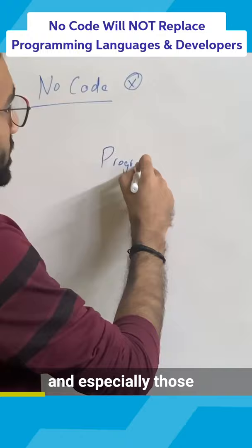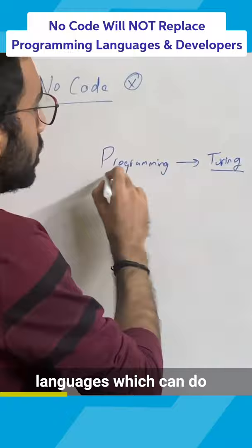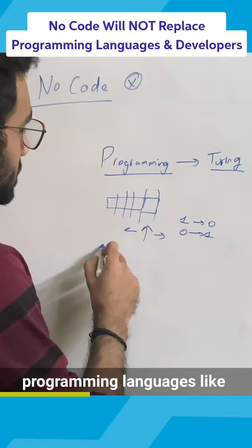Programming languages exist, and especially those programming languages which are Turing complete, are the programming languages which can do whatever a particular computer is able to do.